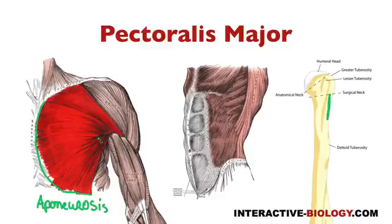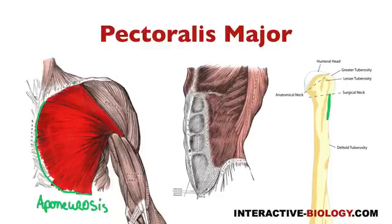Now, what's going to happen when this muscle contracts? What is the action? As we mentioned before, when a muscle contracts, you can imagine the insertion point — or the bone it's inserted on — moving towards the origin. So if we're dealing with the clavicular head and it contracts, you can picture the arm moving in that direction, basically elevating the arm. This is not a 3D illustration, so it's hard to fully show, but you're essentially raising your arm.